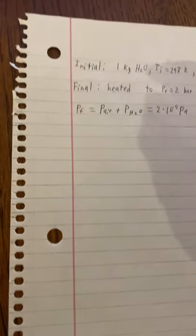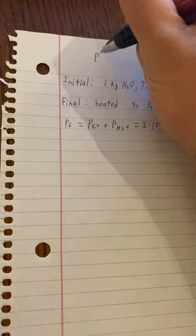So using the ideal gas law, the ideal gas law is essentially PV equals nRT. If you do not know, that is what many of these equations are built off of.